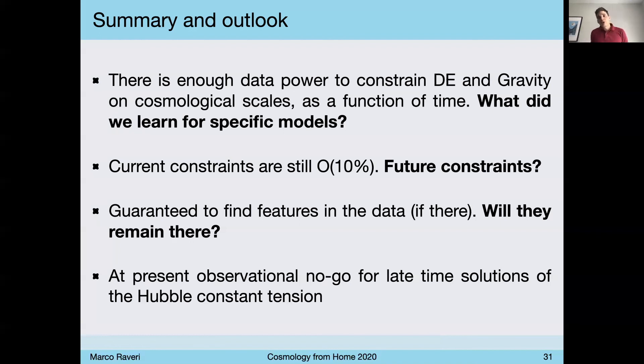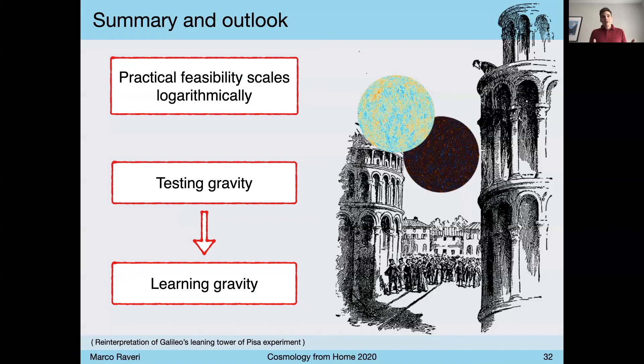And these types of approaches are guaranteed to find all features in the data that are compatible with our expected, with our theoretical expectations on smoothness of these type of models. And some of them are in the data. And it's, I believe, interesting to understand whether they will remain there as we gather more and more precise data. At present, one of the things they provide is an observational no-go theorem for late-time solutions to the Hubble constant tension that can at most go halfway.